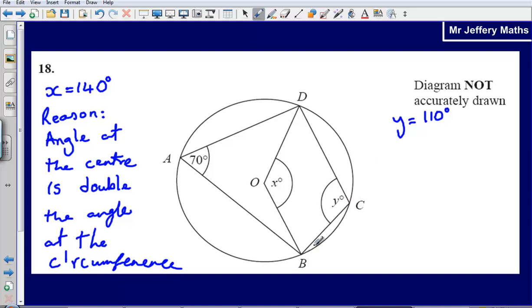So a cyclic quadrilateral is simply a quadrilateral, so a four-sided shape that is inside a circle that touches the circle at all of the points on the quadrilateral. So we can see here that A, B, C, and D are all touching the circle. It creates a four-sided shape, and that's what we call a cyclic quadrilateral.